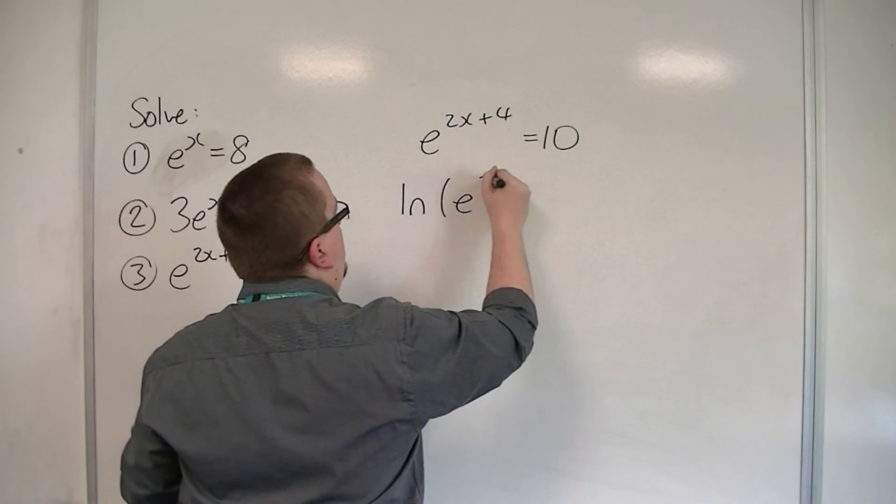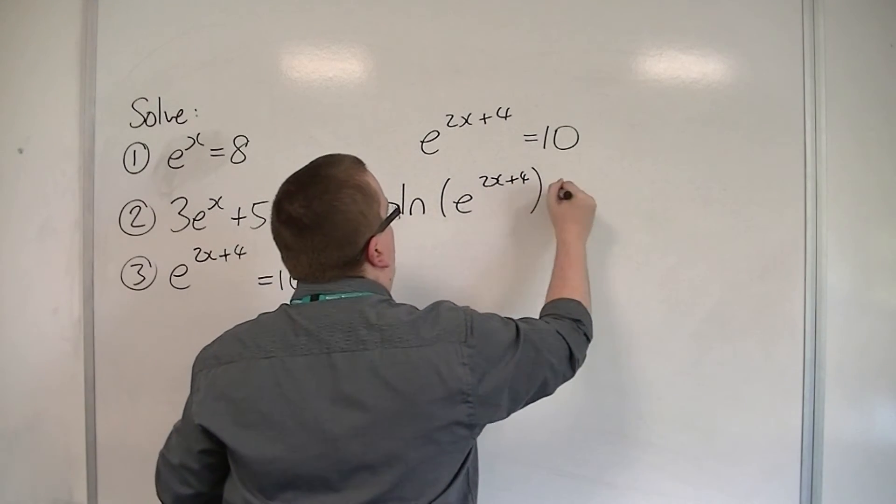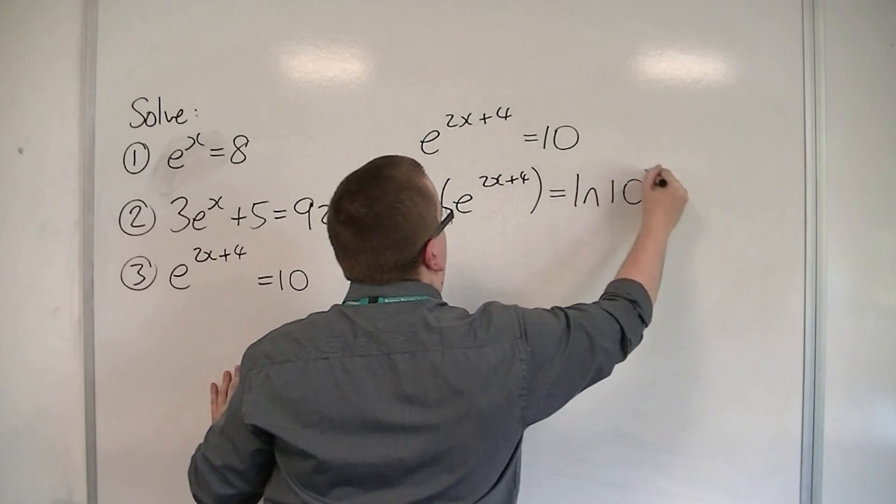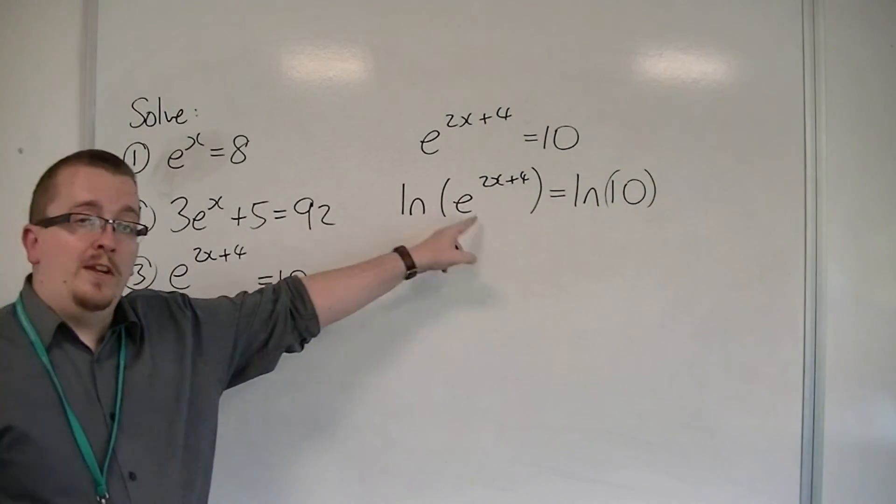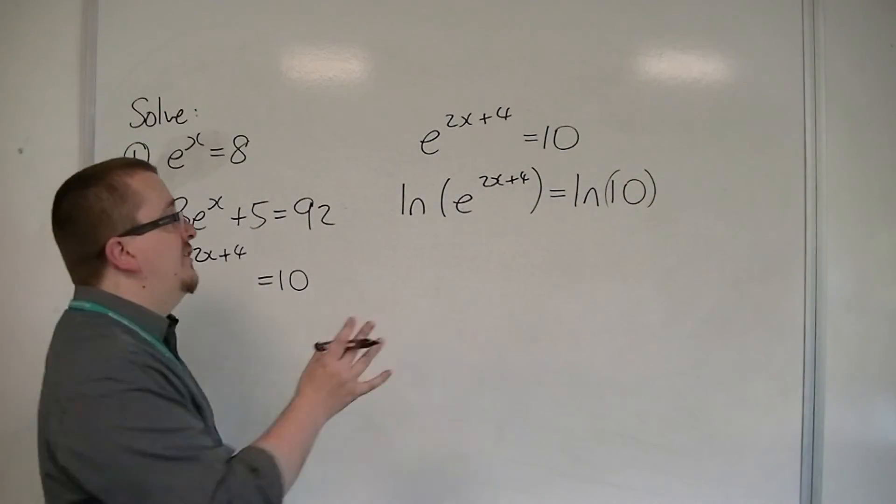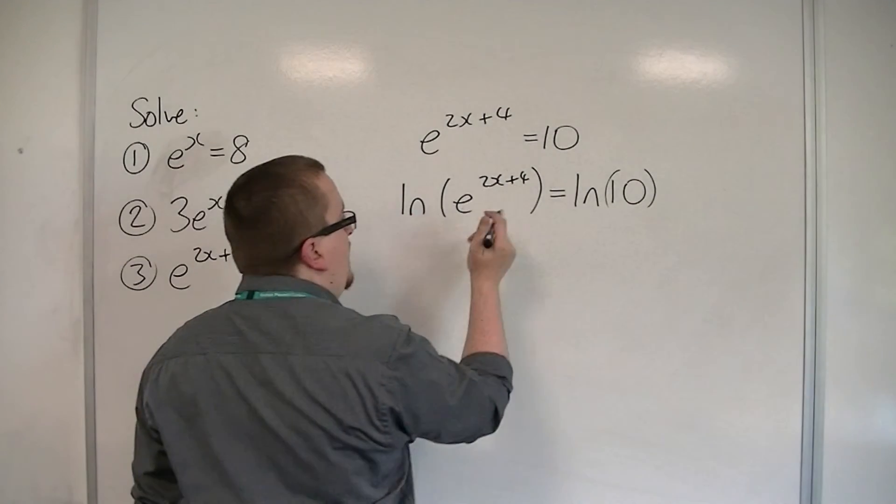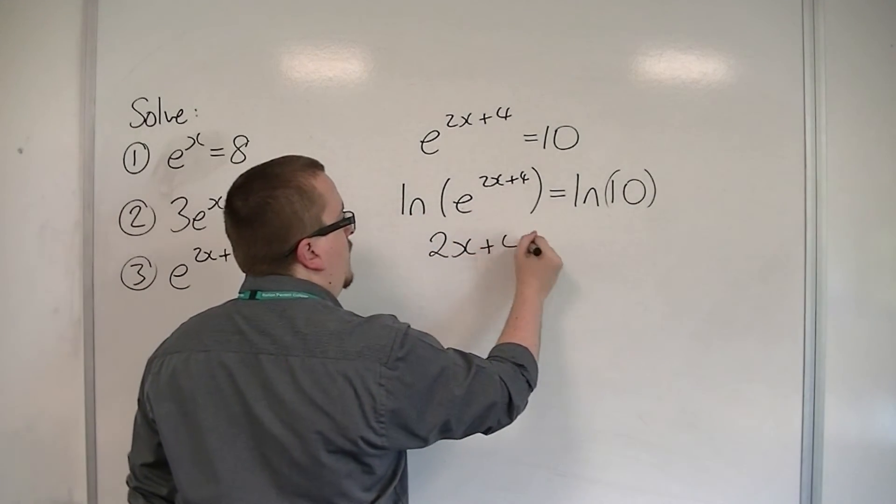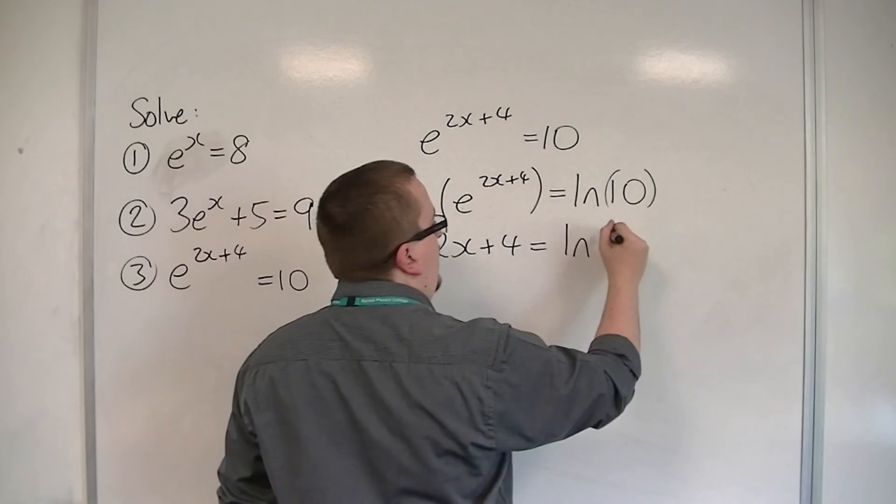So if I log e to the 2x plus 4 and log 10, then what happens is that because I have the log and the e next to each other, they cancel each other out. And what I'm left with is the 2x plus 4. So 2x plus 4 is equal to log of 10.